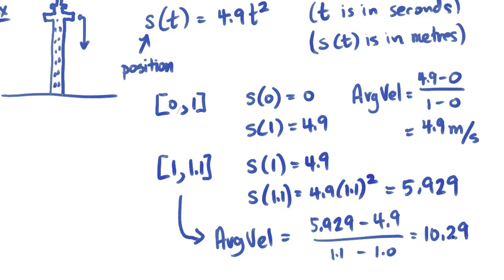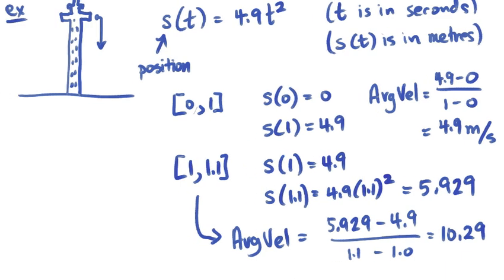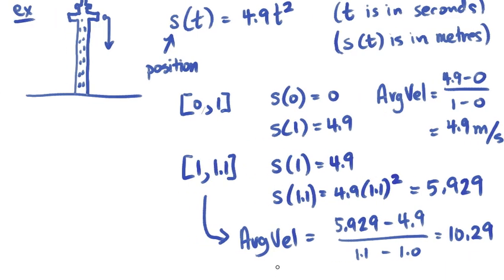So as you can see, the time frame from when I started to drop this from 0 seconds to 1 second, I was only falling at 4.9 meters per second. But the average velocity is definitely speeding up from 1 to 1.1 seconds and looking at closer to 10.29.